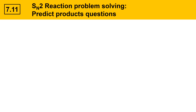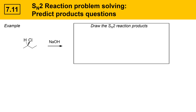The first example we'll look at is one where we're given an alkyl halide and a nucleophile, and we're asked to draw the SN2 reaction products. First, identify the alkyl halide as primary, secondary, or tertiary. This is a secondary alkyl halide, which means it's a somewhat marginal substrate for SN2 substitution. However, since we're asked to draw the SN2 products, we'll do it — the yield for this reaction might not be great.